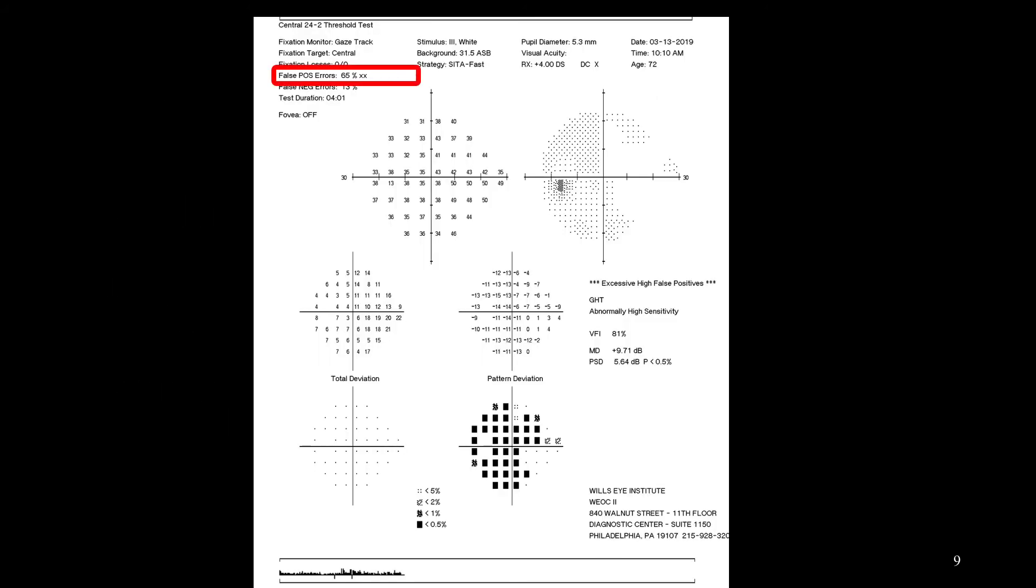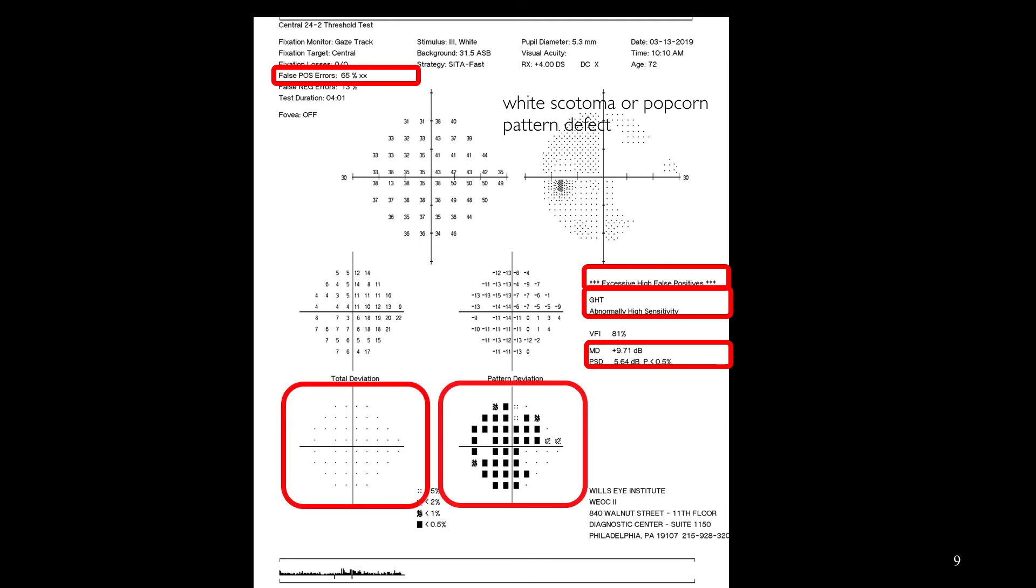This is a patient with high false positives. We get white scotoma or popcorn pattern defect in the gray scale, excessively high false positive, and the GHT shows abnormal high sensitivity. The mean deviation and pattern standard deviation become abnormal, and total deviation looks better than pattern deviation plot.